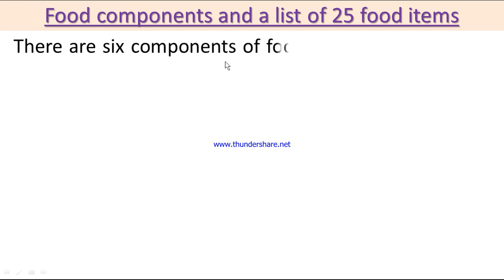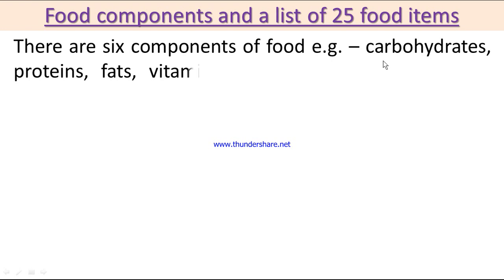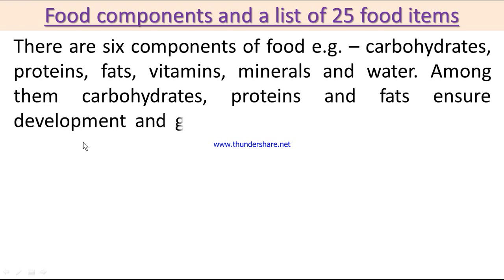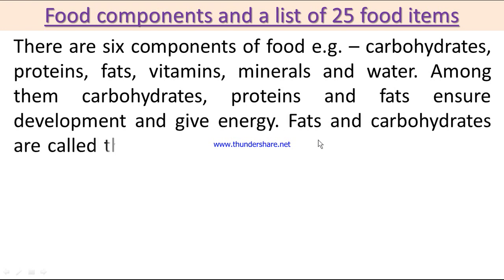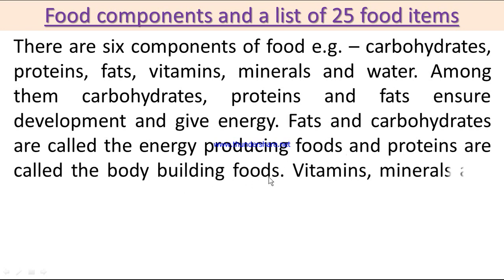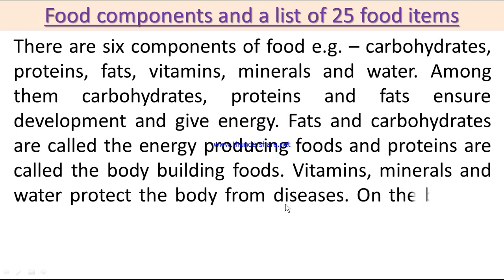There are six components of food: carbohydrates, proteins, fats, vitamins, minerals, and water. Carbohydrates and fats are called energy-producing foods, and proteins are called body-building foods. Vitamins, minerals, and water protect the body from diseases.